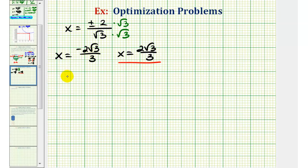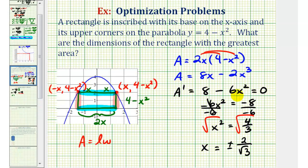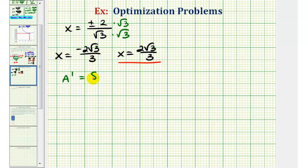Remember our first derivative was equal to 8 minus 6x squared. So the second derivative would be equal to, the derivative of 8 would be 0. The derivative of negative 6x squared would be negative 12x.